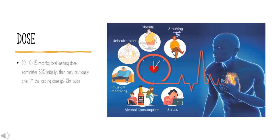Dosing for atrial fibrillation — rapid digitalizing (loading dose) regimen: 4.8 to 12 mcg/kg (0.008 to 0.012 mg/kg) total loading dose. Administer 50% initially, then may cautiously give the remainder of the loading dose every 6 to 8 hours twice. Perform careful assessment of clinical response and toxicity before each dose.